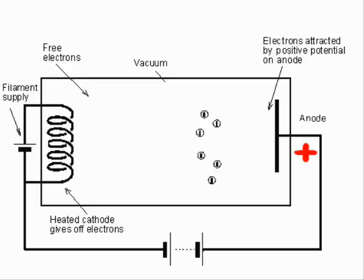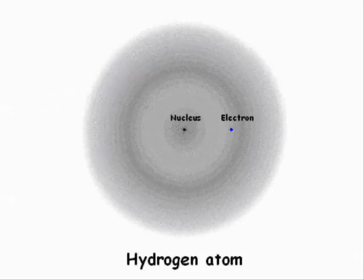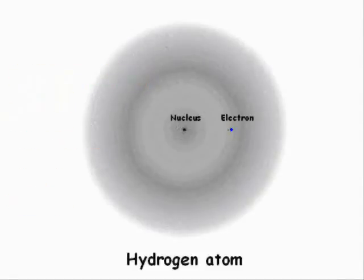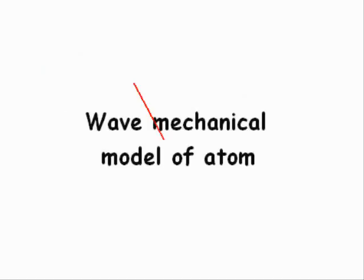Today we know that in a hydrogen atom there is only one force exerted on its electron — the attraction from the nucleus. But this attractive force cannot keep the electron in consistent motion, and there is no force which can create the so-called matter wave of the electron. Therefore, the present wave mechanical model of the atom is simply wrong.